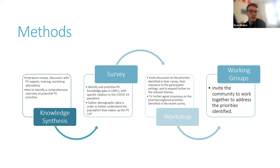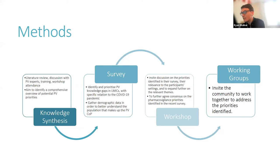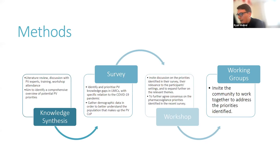The next step was to run an online workshop where the themes identified in the survey were discussed in greater detail. And finally, there is a plan to form working groups to address the top priorities identified in both the survey and the workshop. This project follows a methodology of participatory action research, in that each of these steps will undergo a process of research, action, and then reflection which will inform the next step. So the knowledge synthesis informs our survey, the outcomes of our survey inform the design of our workshop, and the results of our workshop inform what we do with the working groups.